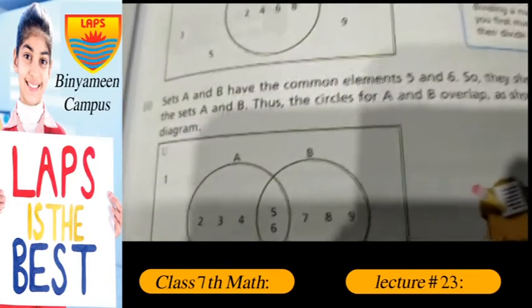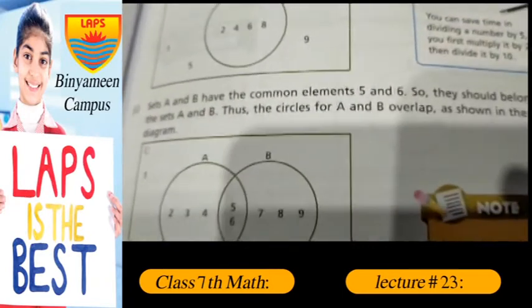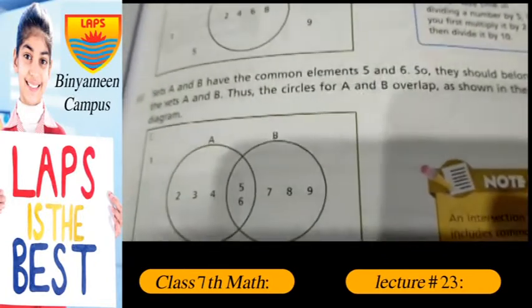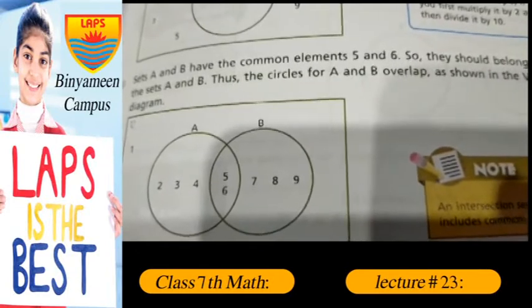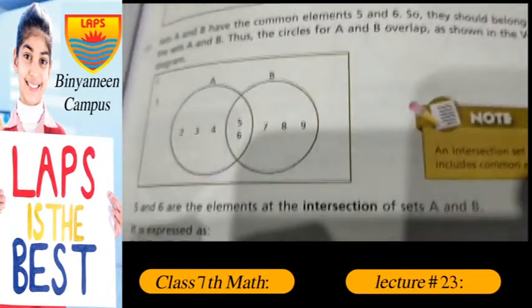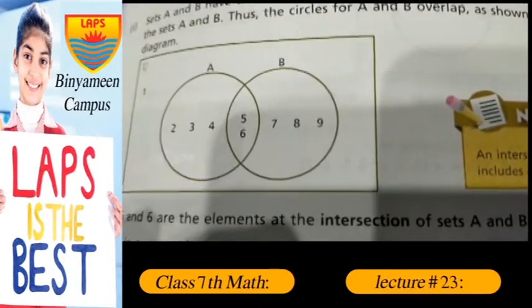Point 2: Sets A and B have the common elements 5 and 6, so they should belong to both the sets A and B. Thus the circles for A and B overlap as shown in this figure. Venn diagram 5 and 6.